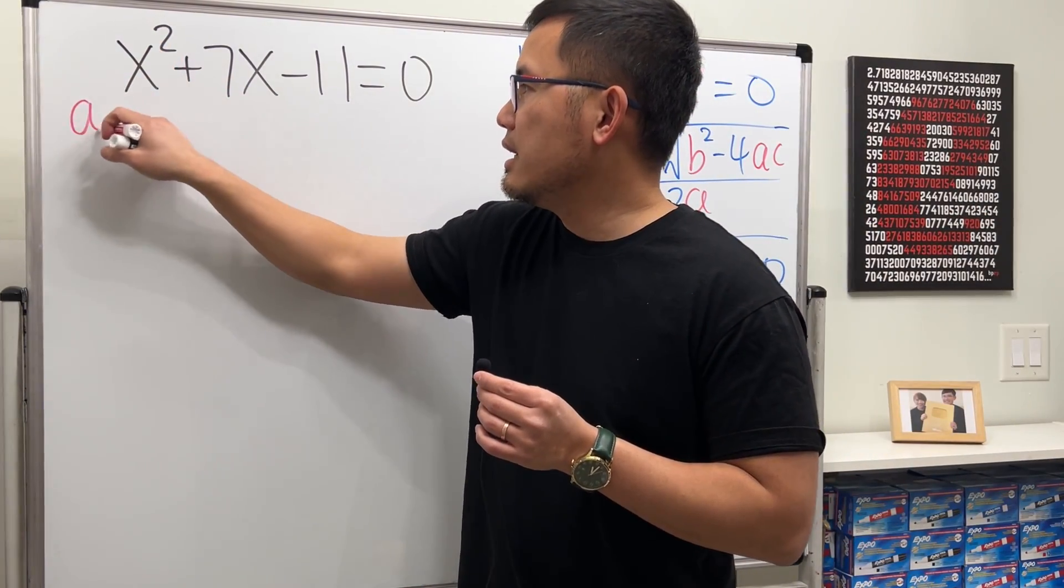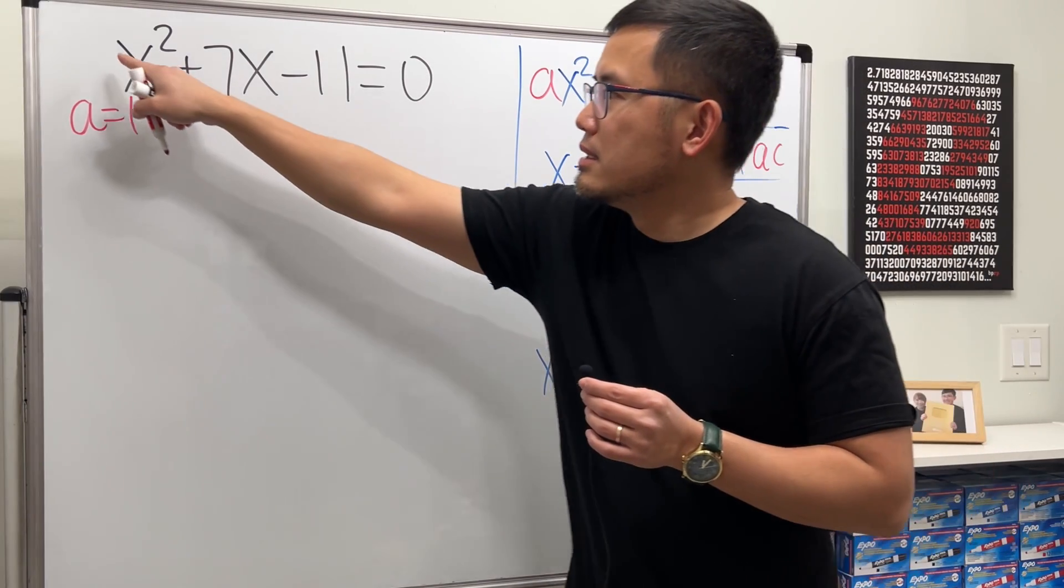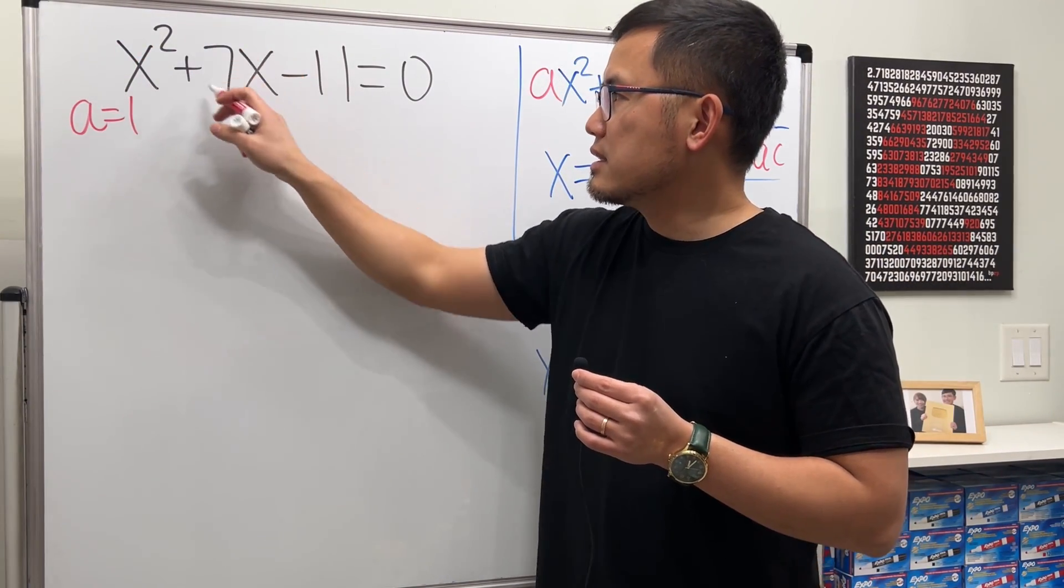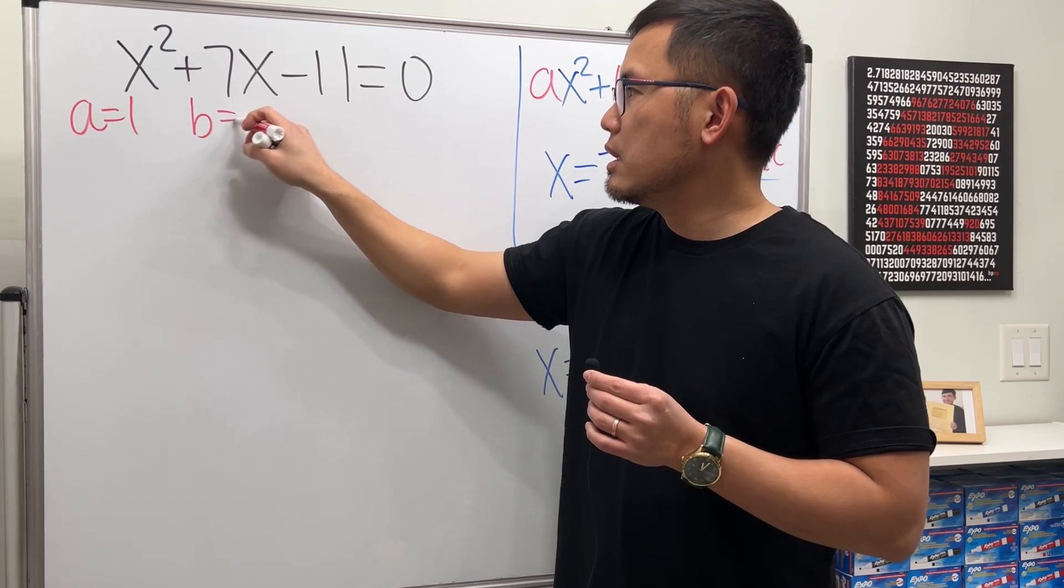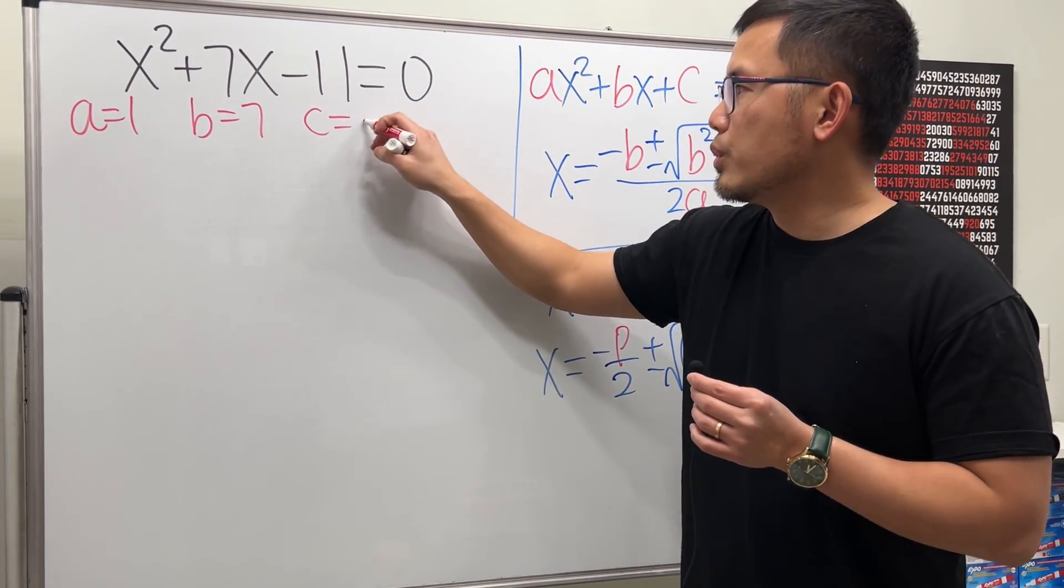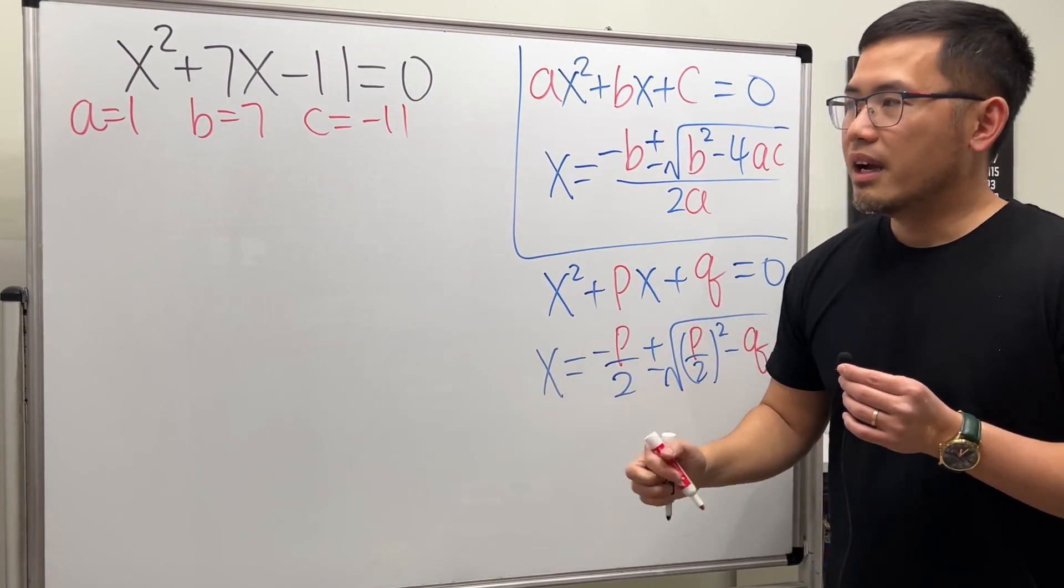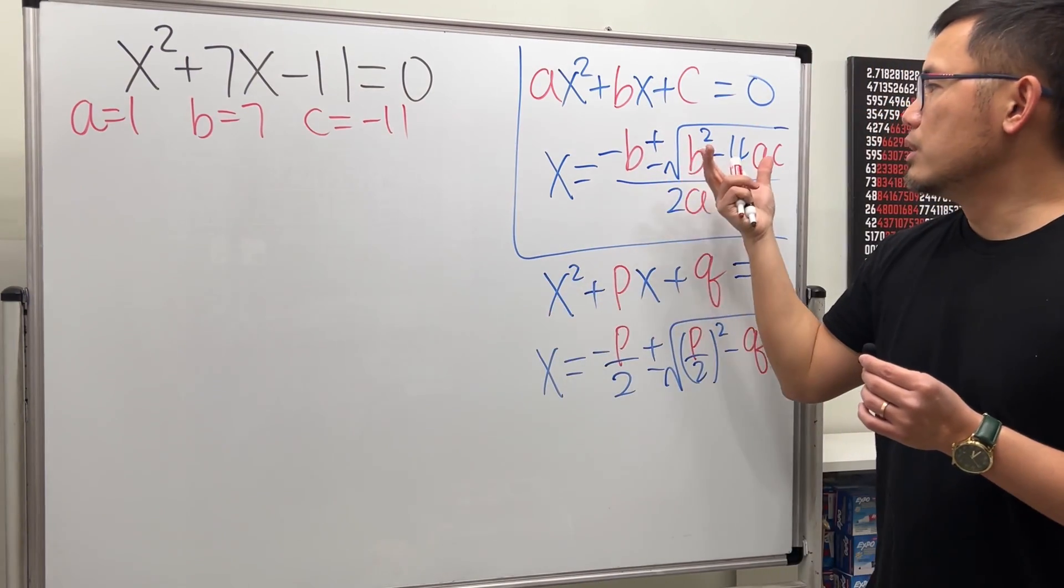Here we see that a is equal to 1 because this is meant to be 1x². Next, the 7 is the b, and then lastly, c is equal to -11. And then we can just bring these numbers into this formula here.